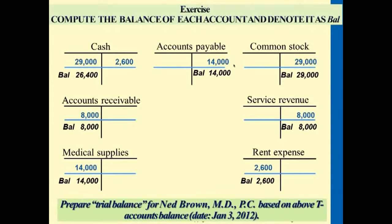If we're doing a trial balance, we start from cash, accounts receivable, and medical supplies — all listed under the debit side. So you have $26,400, $8,000, and $14,000 for the asset accounts. Next is accounts payable at $14,000, which goes under the credit side because liabilities have a normal balance on the credit side.